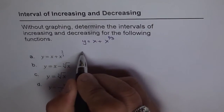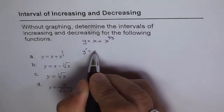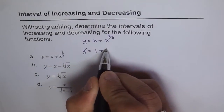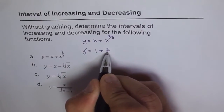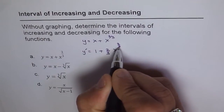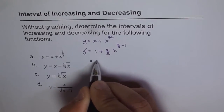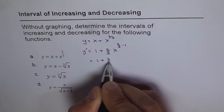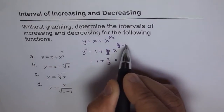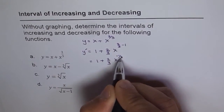Now let's find the derivative first. So y dash: the derivative of x is 1, and x to the power of 2 over 3 will give me 2 over 3 times x to the power of 2 over 3 minus 1. This can be written as 1 plus 2 over 3 times x to the power of 2 minus 3 over 3, which is minus 1 over 3.